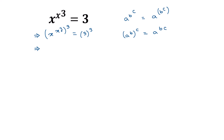Here x is a, x cube is b, and 3 is c. So we can write the left side as x to the power x cube times 3, which is equal to the right side: 3 to the power 3.